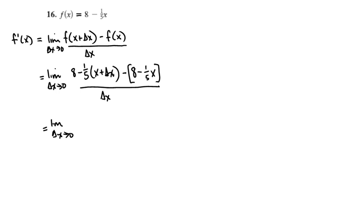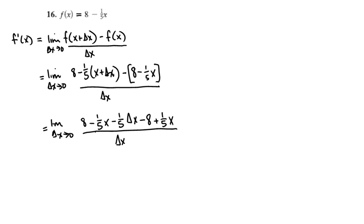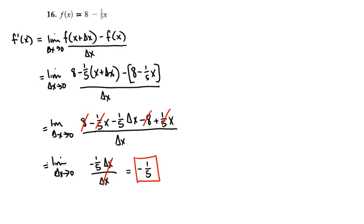We'll have the limit as delta x approaches 0 of 8 minus 1/5 x minus 1/5 delta x, minus 8, then plus 1/5 x, all over delta x. Anything that doesn't have a delta x should go away — we have 8 and negative 8, negative 1/5 x and positive 1/5 x. That leaves just negative 1/5 delta x over delta x. The delta x's cancel, leaving just negative 1/5, as we expected.